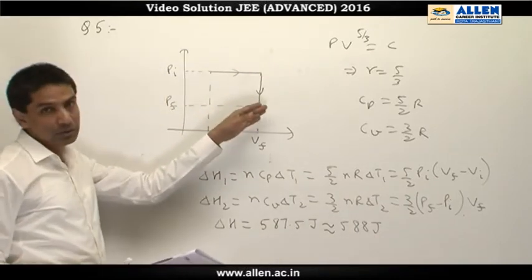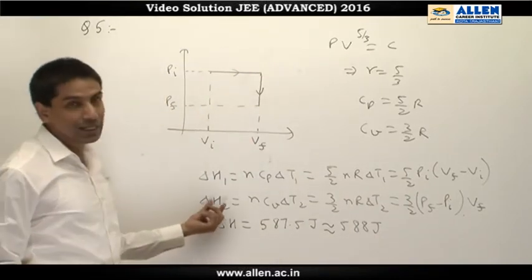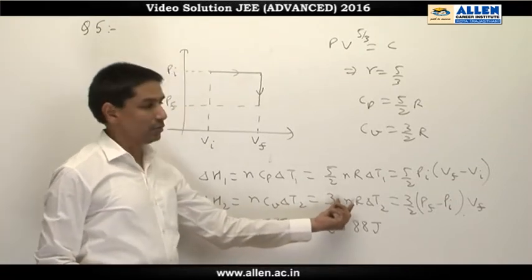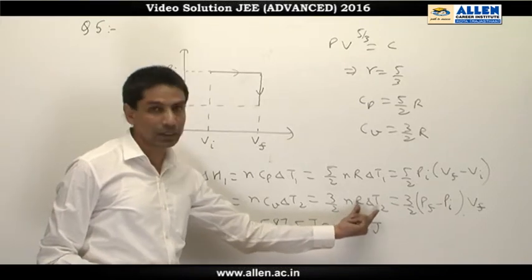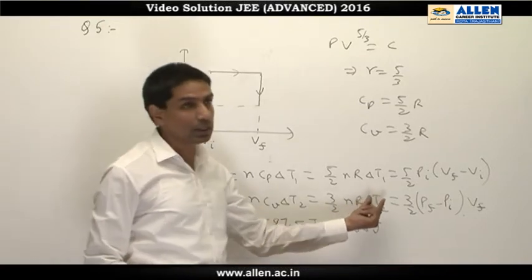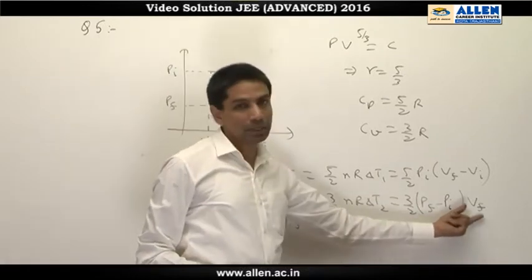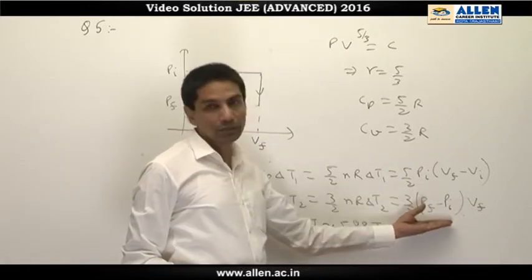In the second process when it is isochoric, the heat given as n cv delta T where cv is 3/2 R. This becomes 3/2 into n R delta T_2. n R delta T by ideal gas equation becomes delta p multiplied by volume. This will be negative.